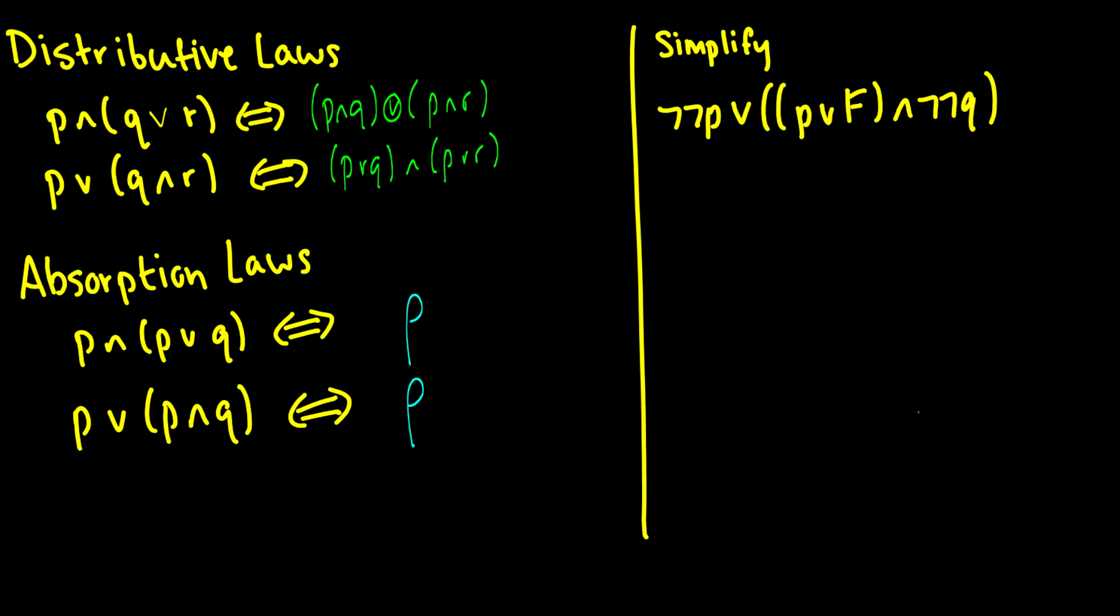So, let's simplify this. Not, not, P, or P or false, and not, not, Q. First of all, let's do our double negations, because double negations are a pain. So, we're going to do this all at once. So, we'll write DN.